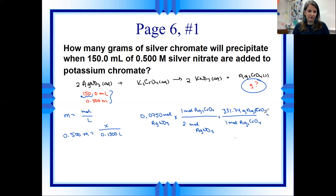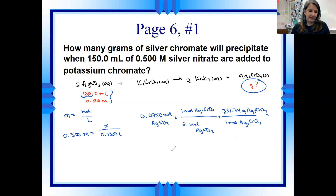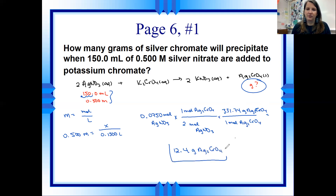Now we solve: 0.0750 divided by 2, times 331.74. We'll have three significant figures, so the answer is 12.4 grams of silver chromate.